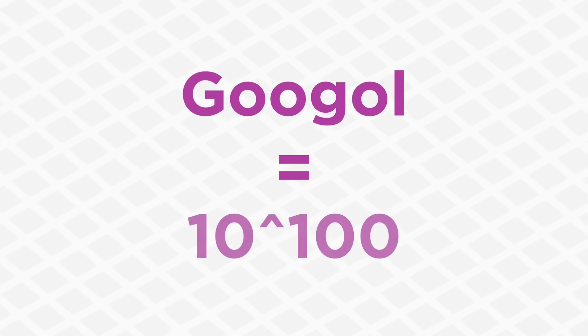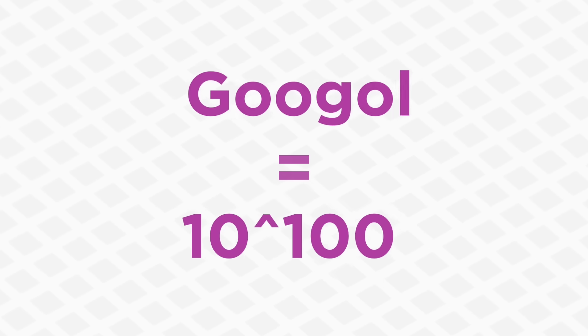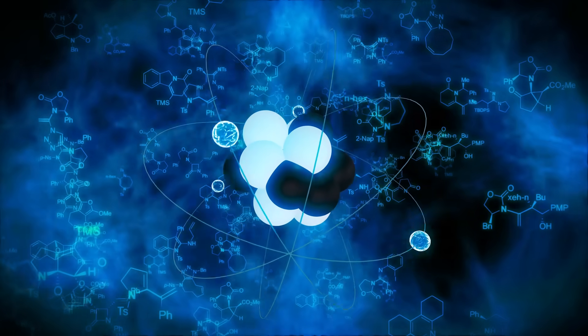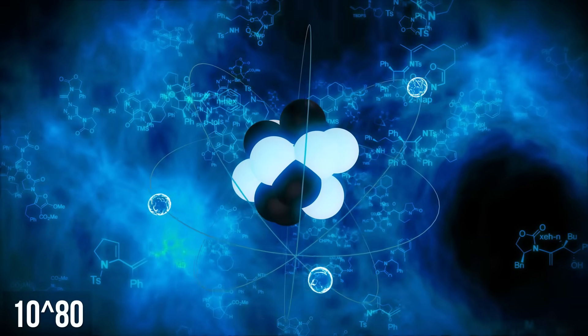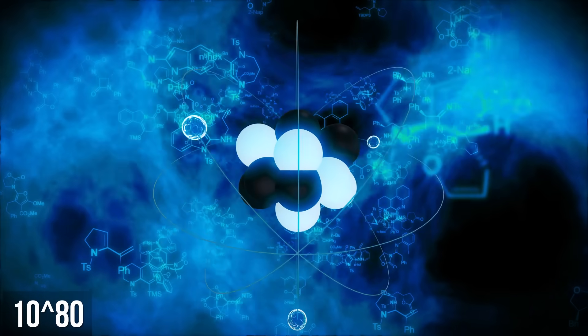Which is the same as 10 to the 100th power, or a 1 with 100 zeros written after it. Which, for the record, looks like this. A Google is an absolutely enormous number, and it's almost impossible for our human brains to truly comprehend it. To try and put it into some perspective, 10 to the 80th power is a vastly smaller number than a Google is.